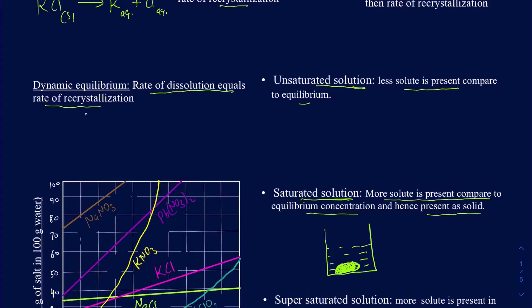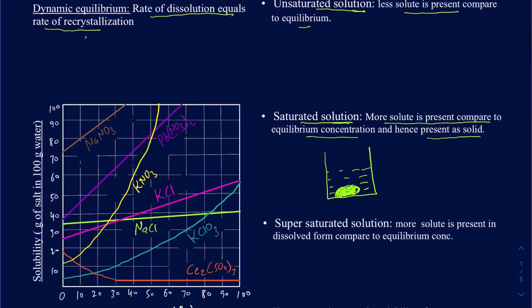When you are at the saturation limit, you cannot increase the concentration of solute in that solution unless you heat it. There are times when you reach a situation where you have more solute dissolved than the equilibrium allows — a higher concentration than needed — and that solution is called a supersaturated solution. Supersaturated solutions can be fairly stable unless you disturb them, at which point they start solidifying quickly.